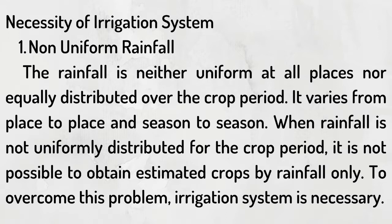Necessity of irrigation system. Number 1: Non-uniform rainfall. The rainfall is neither uniform at all places nor equally distributed over the crop period. It varies from place to place and season to season. When rainfall is not uniformly distributed for the crop period, it is not possible to obtain estimated crops by rainfall only. To overcome this problem, an irrigation system is necessary.